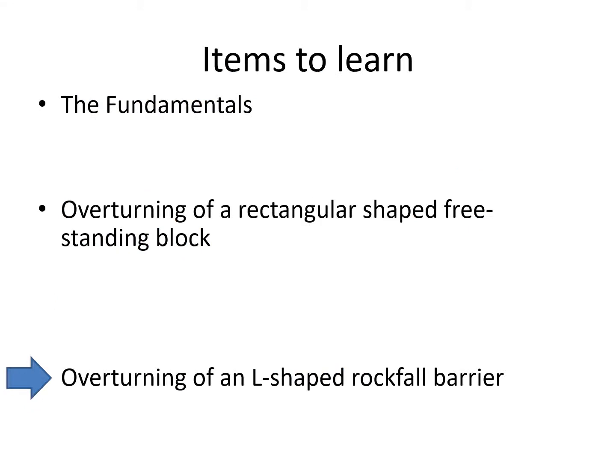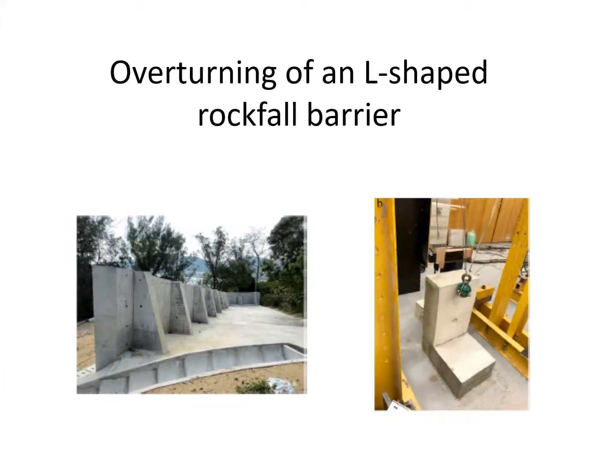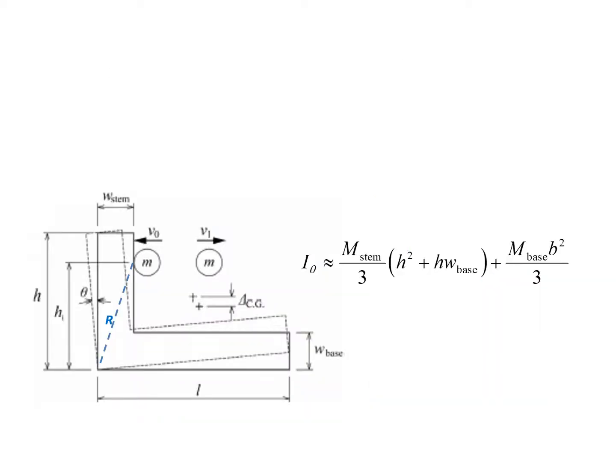Overturning of an L-shaped block fall barrier. An L-shaped block section is representative of reinforced concrete barriers being used for landslide protections. The methodology that has been developed for predicting the overturning of a rectangular-shaped object has been adapted to the overturning of an L-shaped barrier.